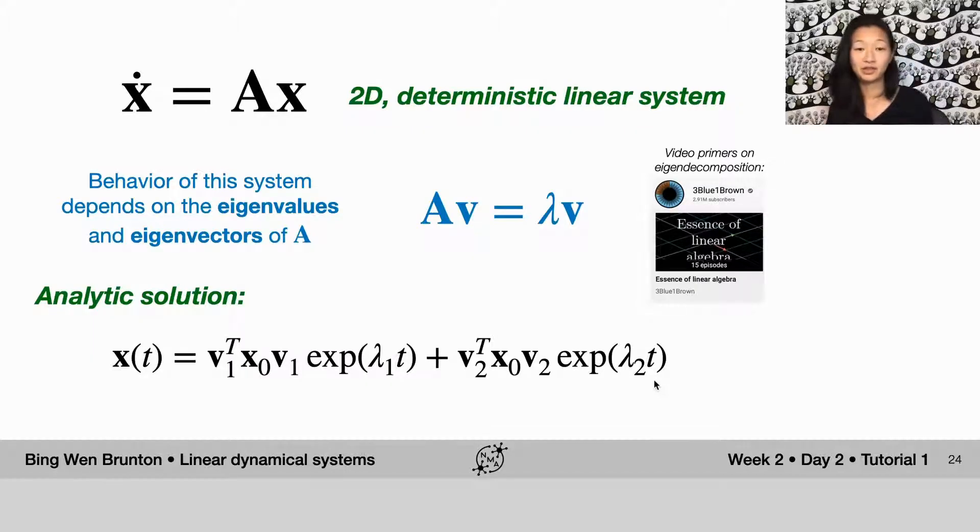So the eigendecomposition is a really important concept here because it allows us to determine separate directions in which the linear dynamical system changes. And just like before, the intuition here is that the value of lambda 1 and lambda 2 tells you about the direction of the growth, and the eigenvectors V1 and V2 tell you about the spatial dimensions in which those changes are taking place.